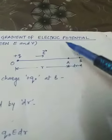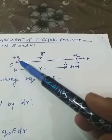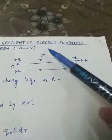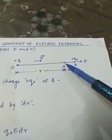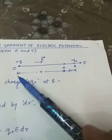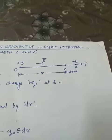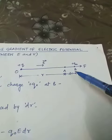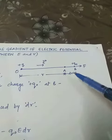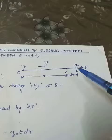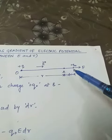First, let's see the diagram. We have a point charge plus Q which creates an electric field E at point A, which is a distance R from O, and another point B which is at a distance DR from A.